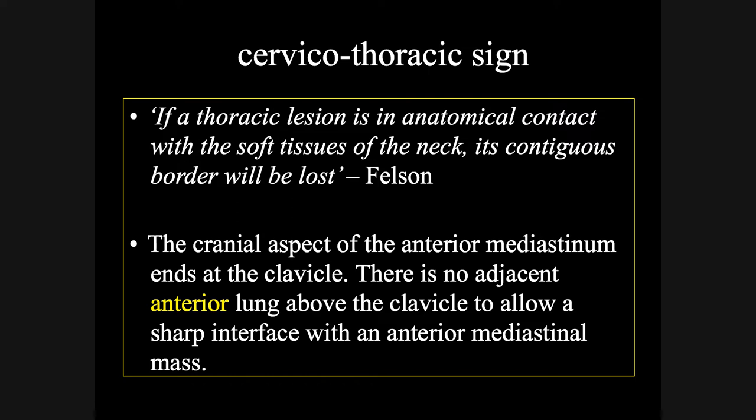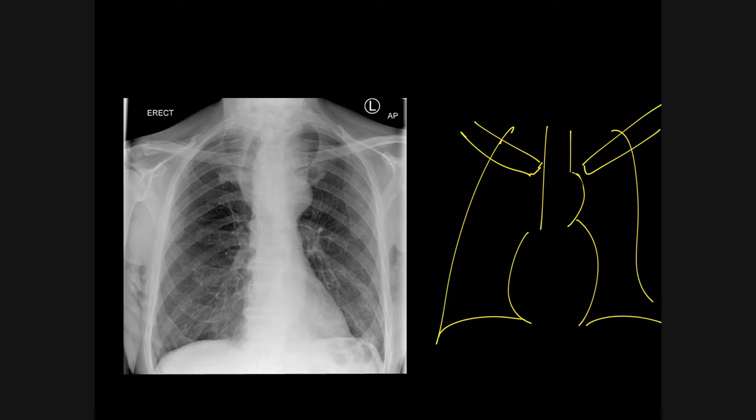This is a PA radiograph of a patient who has a goiter. The interface of the mass lesion and the lung is very sharp below and at the clavicle, just here. But as the lesion goes above the clavicle, it fades and is very difficult to see. This is the hallmark of an anterior mediastinal mass lesion, which is pushing the trachea to the right hand side.